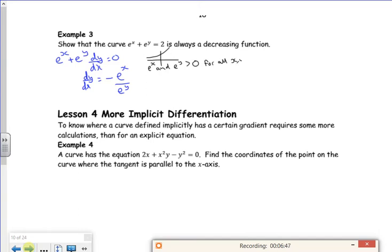So e^x and e^y are greater than zero for all x and y belonging to the reals. If both these bits are positive, that must mean dy/dx is less than zero because e^x and e^y are positives divided by positives. So dy/dx is less than zero.